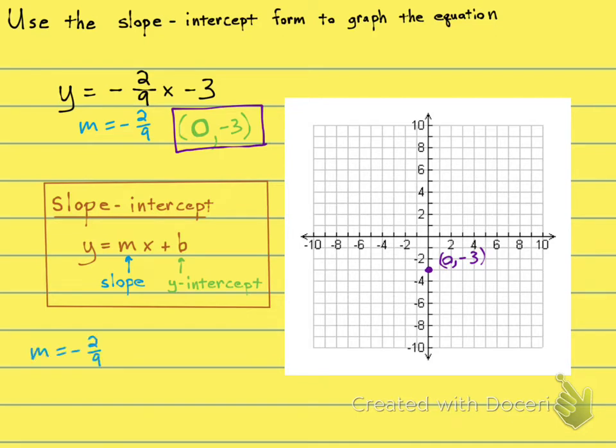Now there are two ways you can look at this. You can look at the rise as being negative 2 over the run as being 9, or the rise as being positive 2 and the run being negative 9. Either way, you'll get the same line.